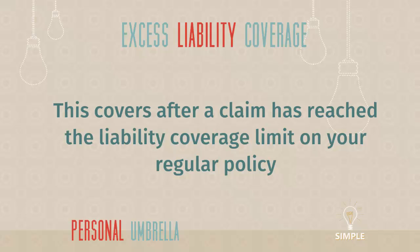Here's a quick example: something really bad happens and someone is hurt badly, cannot continue working, and the claim ends up being $750,000. If your underlying auto policy has $500,000 of liability coverage, that pays out first. But you have $250,000 left over beyond your auto policy limits. Without a personal umbrella, that comes out of your pocket. With a personal umbrella, it's paid out by your umbrella.